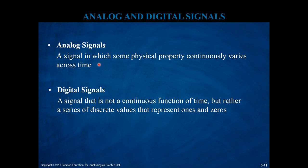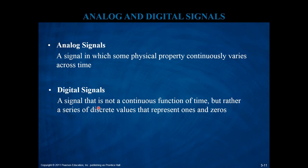An analog signal is a signal in which some physical property continuously varies across time. Basically, you're sending information by selecting a particular property — let's say voltage — and changing its parameters continuously over time. A digital signal, on the other hand, is not a continuous function of time but rather a series of discrete values representing ones and zeros. Digital signals are not continuous; instead there is some kind of convention for a discrete value that is picked up at the destination.